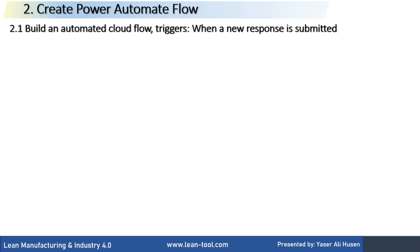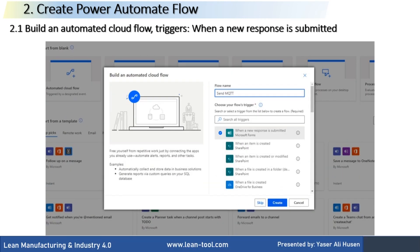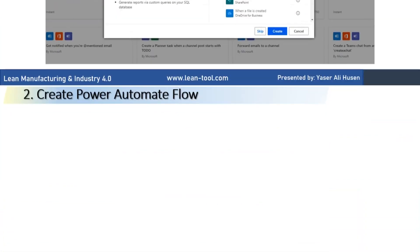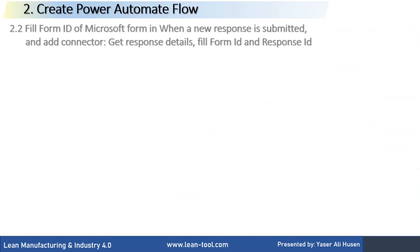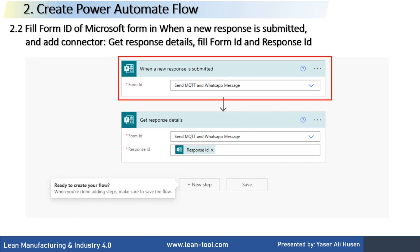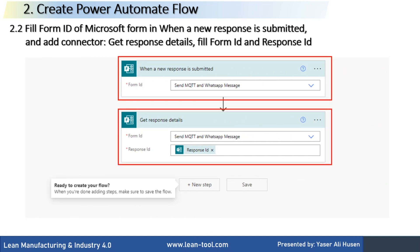Next step: create a Power Automate Flow. Build an automated cloud flow and select the trigger. When a new response is submitted, click the Create button. In the Power Automate Flow, fill in the form ID of the Microsoft Form. In the 'when a new response is submitted' connector, select the form that we created previously. Then add a new connector: get response details, fill in the form ID, and response ID.